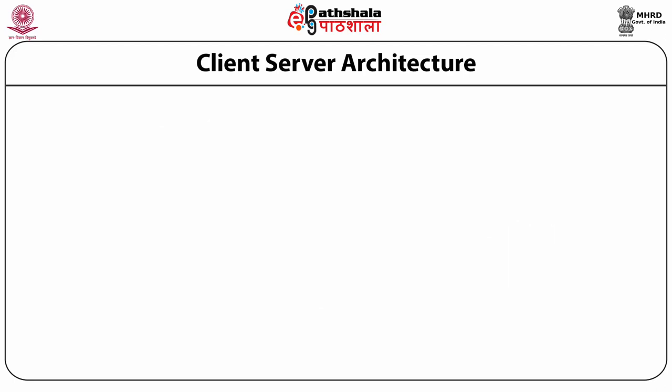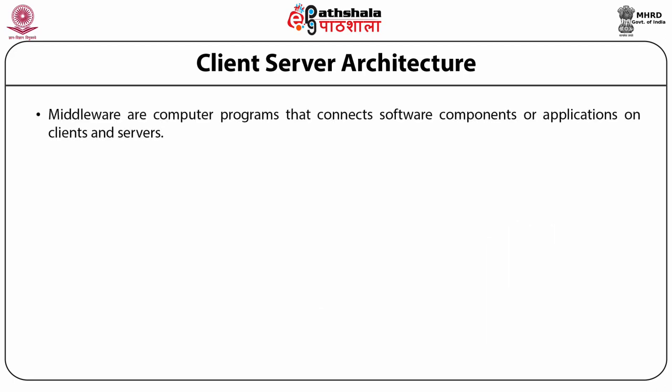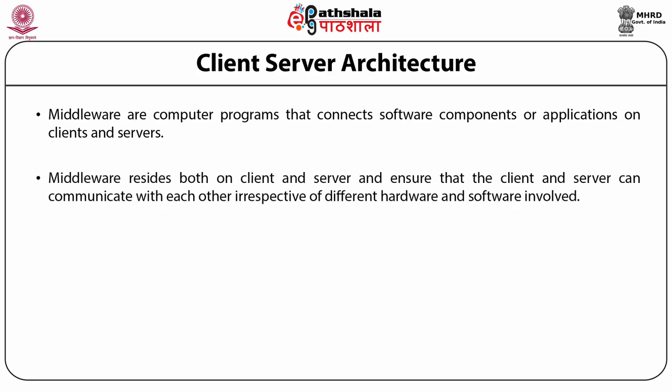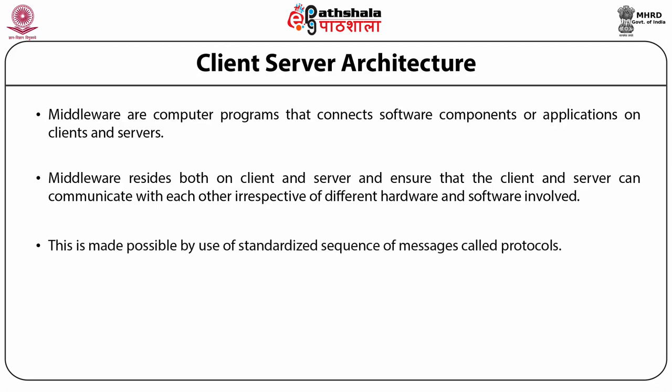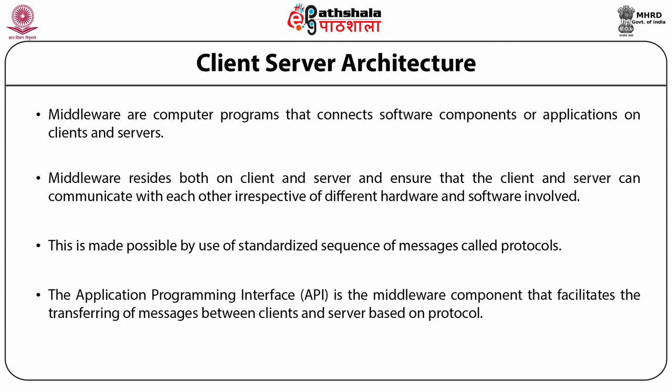In client-server architecture, middleware are the computer programs that connect software components or applications on the client as well as servers. Middleware normally resides on both client as well as server and ensures that the client and server can communicate with each other irrespective of different hardware and software involved. This is made possible by using standardized sequences of messages called protocols. The application programming interface, the API, is the middleware component that facilitates the transferring of messages between clients and server based on a decided protocol.